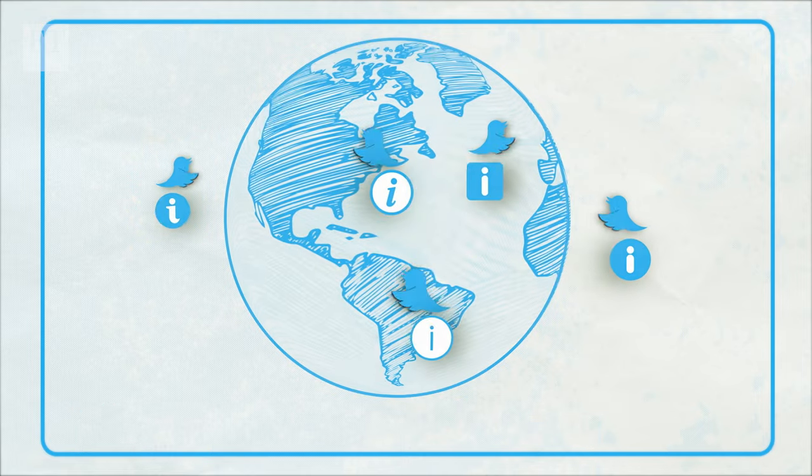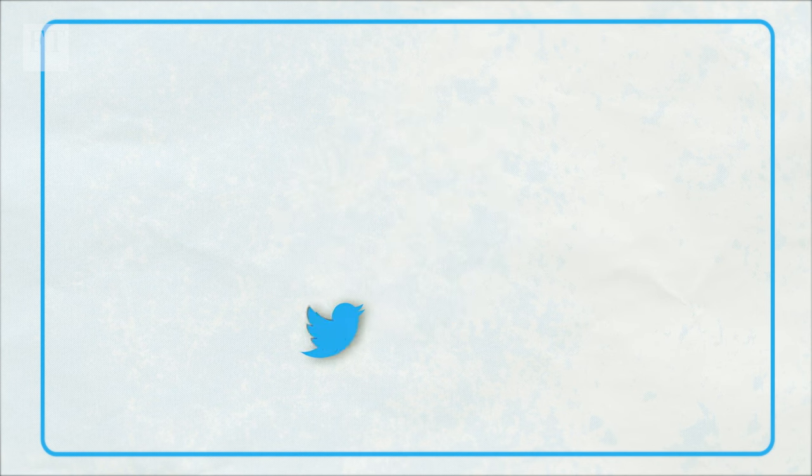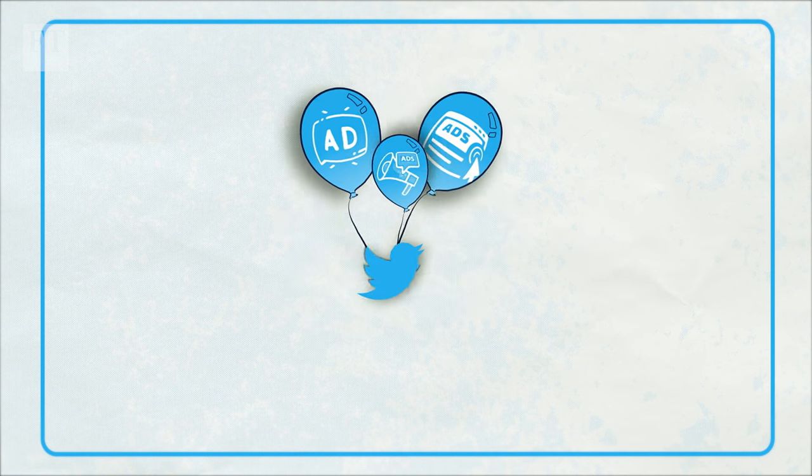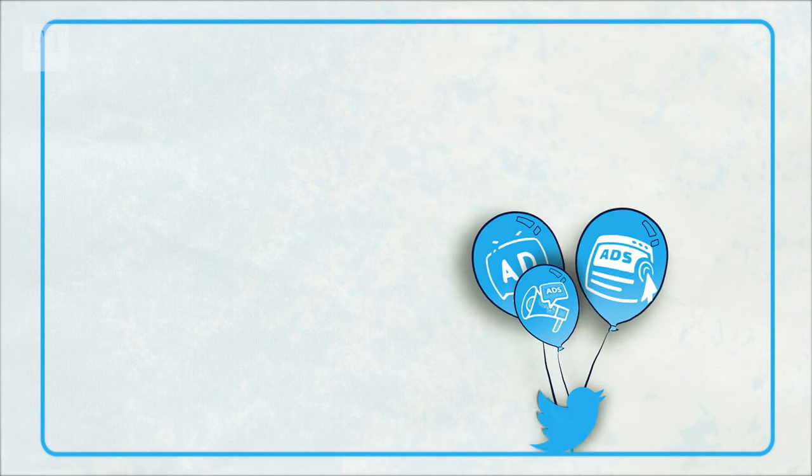Musk has promised to turn Twitter into a more efficient and open tool for sharing information, while trying to keep wary advertisers on the platform, so he can service the enormous amount of debt weighing the company down.